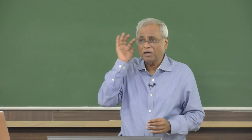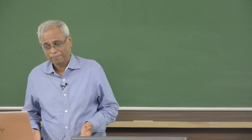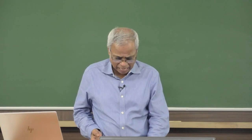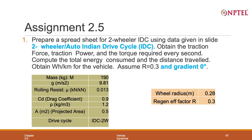I will stop here and in the next class there is an assignment. The assignment is to prepare a spreadsheet for the two-wheeler IDC with the data I have already given. Obtain the traction force, traction power, and torque every second and compute. This time, compute for R = 0.3. You cannot just copy the results I have produced — you actually have to build this spreadsheet yourself.